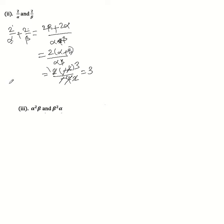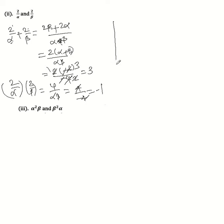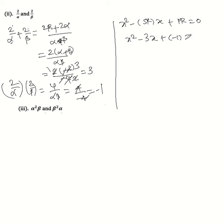The product of roots is (2/alpha) × (2/beta) = 4 / (alpha·beta) = 4 / (-4) = -1. The equation is x² - (sum of roots)x + (product of roots) = 0, so x² - 3x - 1 = 0. This is the correct equation.